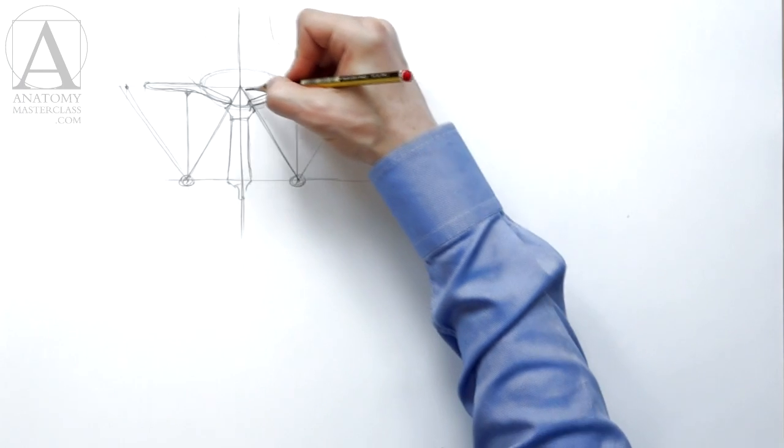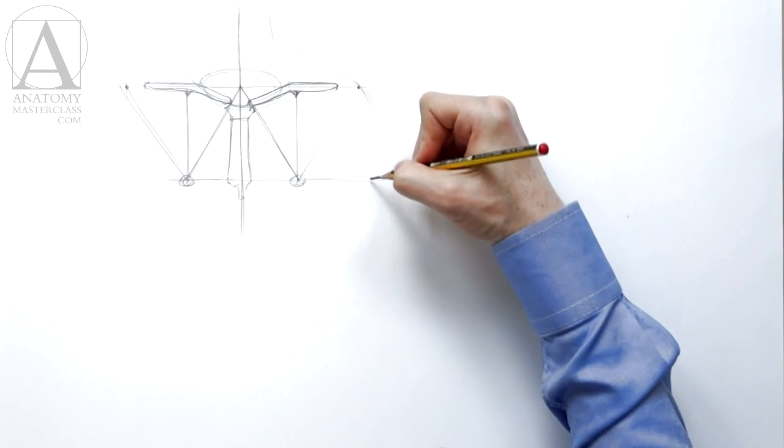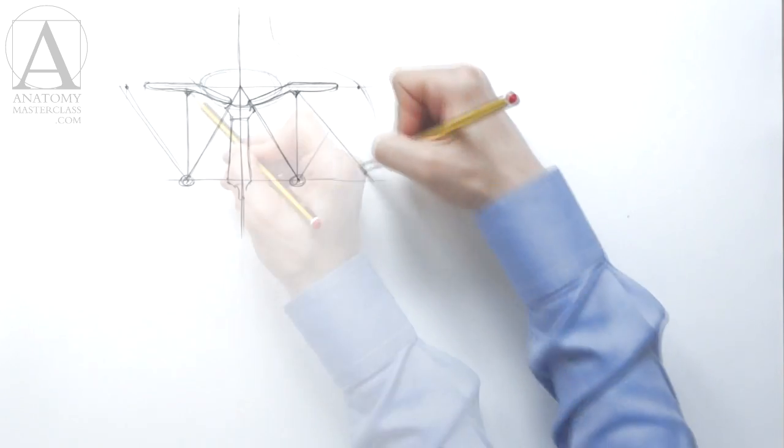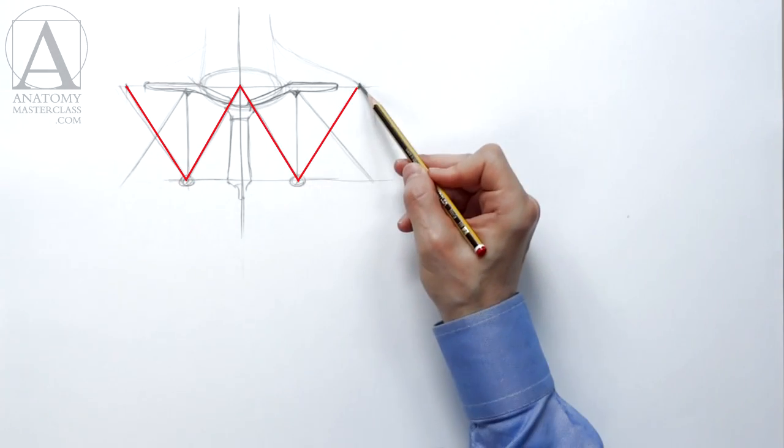There is one more line that runs downward diagonally from the gap between the muscles in the middle of the collarbone. This line is parallel to one side of the triangle. You can now see the W character formed by the diagonal lines.